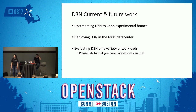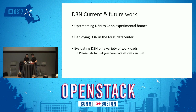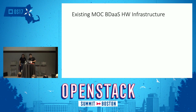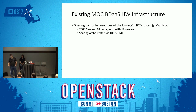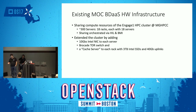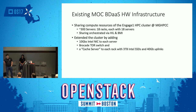I will briefly describe the existing hardware infrastructure in MOC for serving the big data as a service solution. We are sharing compute resources of the Engage One HPC cluster — a production HPC cluster in the MGHPCC shared data center with around 300 servers across 18 racks. We extended this cluster by adding 10 GbE NICs to each server, a top-of-rack switch to each rack, and a cache server per rack with 3TB Intel SSDs and 40 Gbps uplinks.